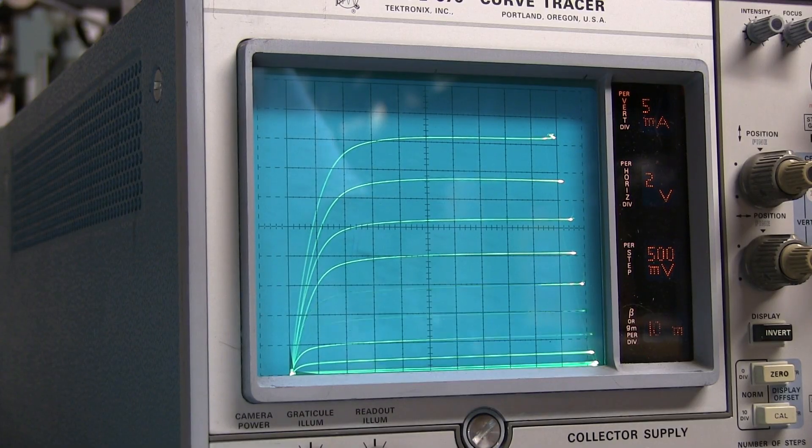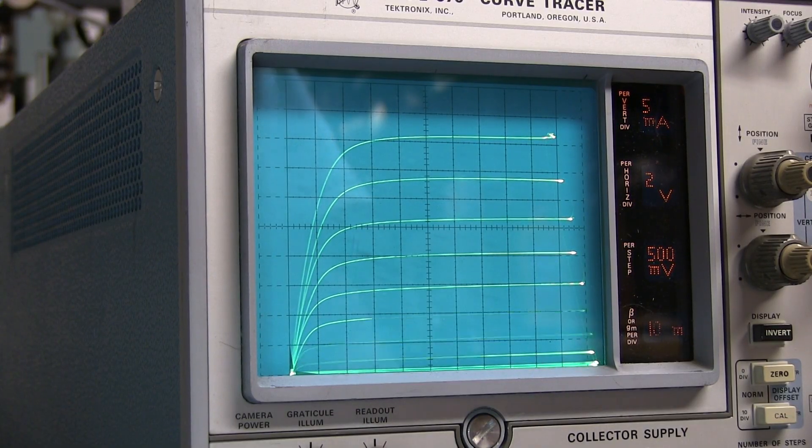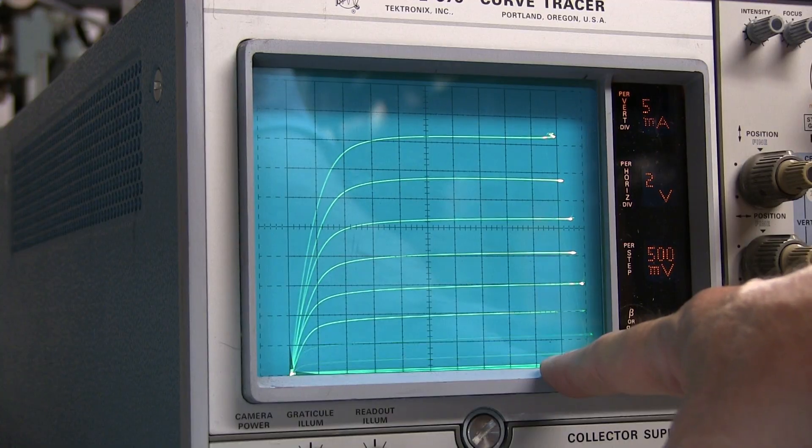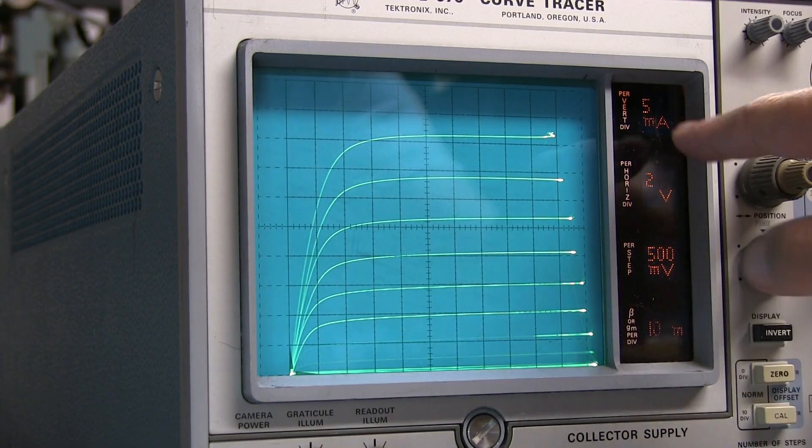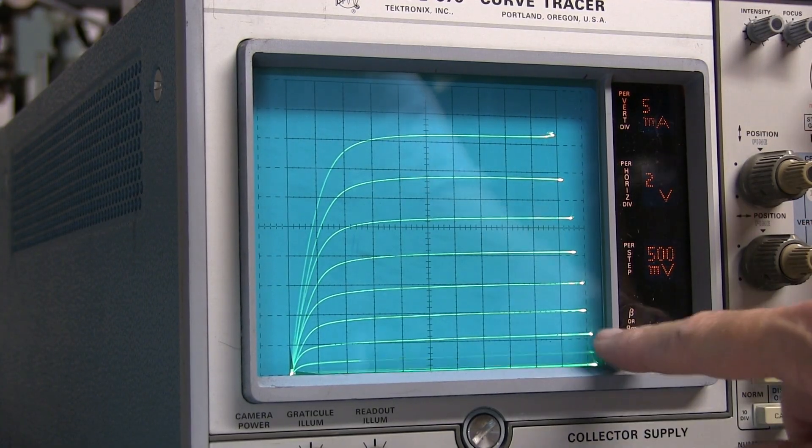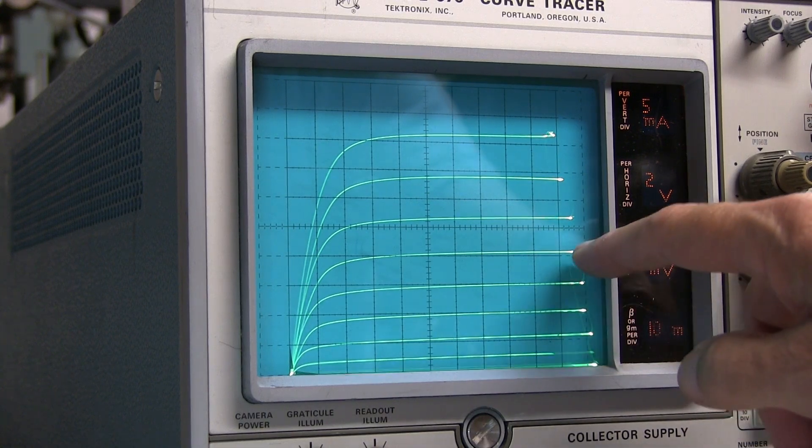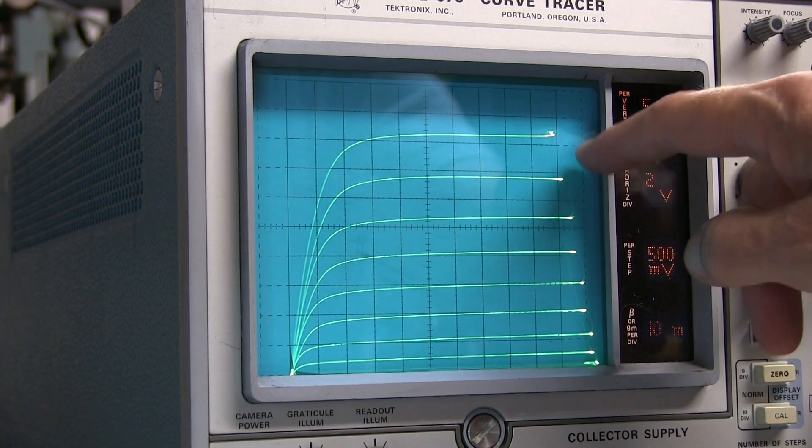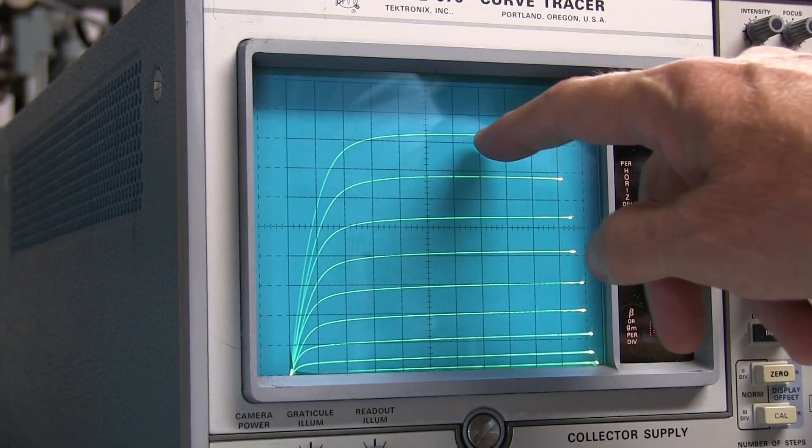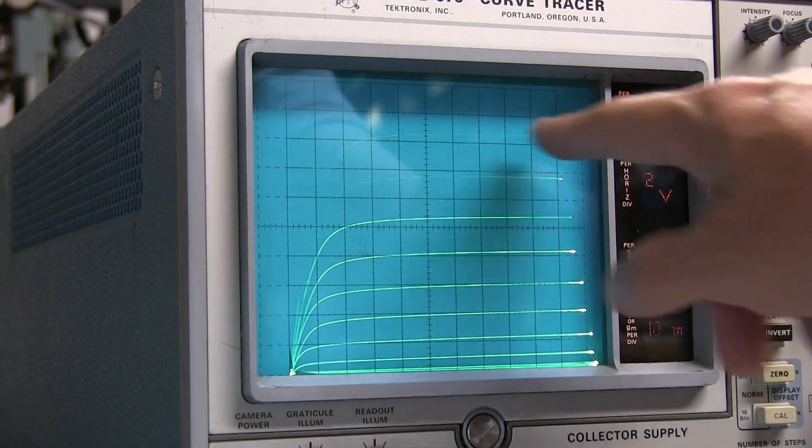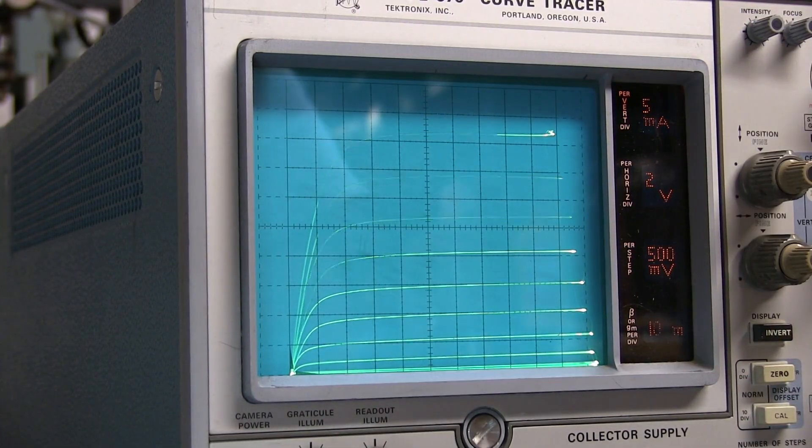Let's compare that to the datasheet specs. While we're looking at that, let's also look at IDSS in the datasheet. If we look here, we're at 5 milliamps per division, so that's 5, 10, 15, 20, 25, 30, 35, 40, so a little over 40 milliamps. We'll call that the IDSS value. Again, let's compare that to the datasheet spec.